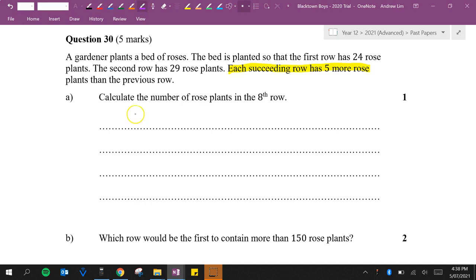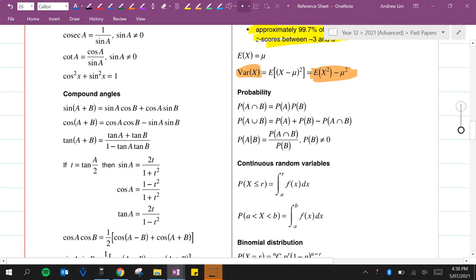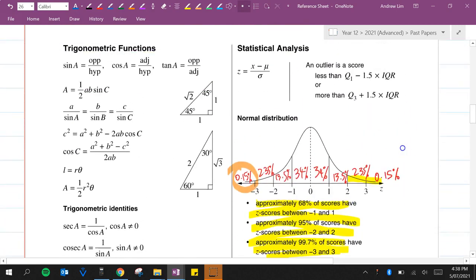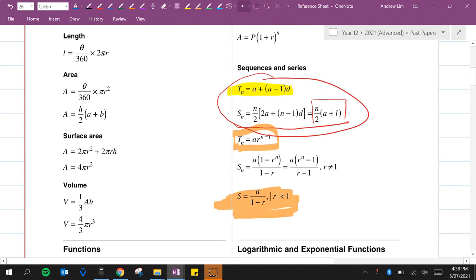So we want the eighth row. How many will there be? Well if we look at our reference sheet, where is it? Here we go, series and sequences. It's this highlighted one here in yellow. A plus N minus 1 D.